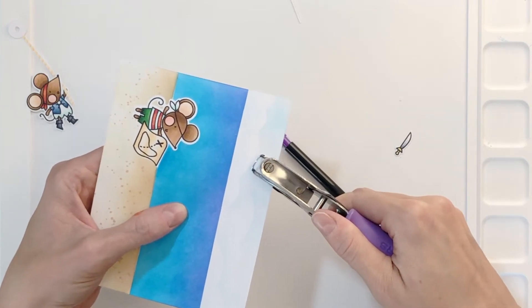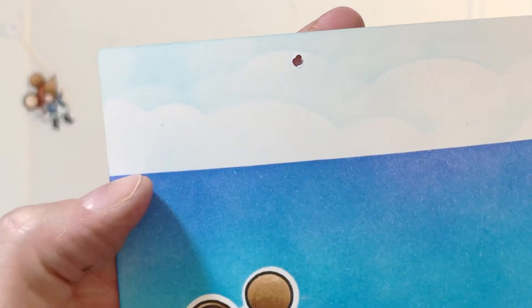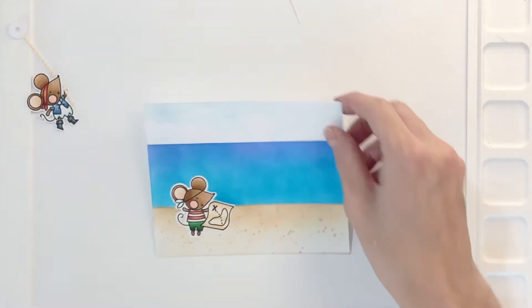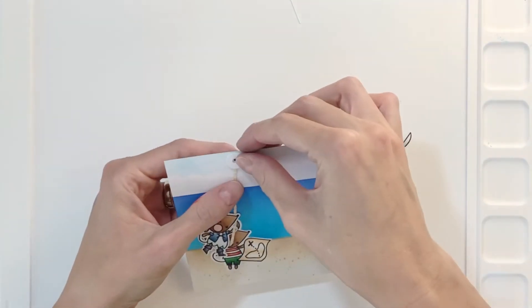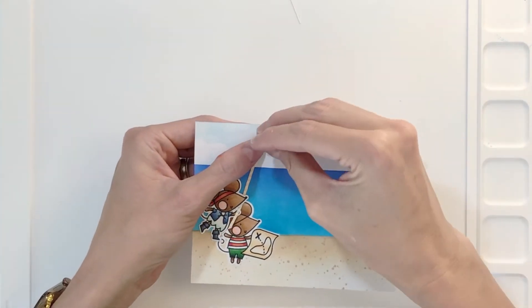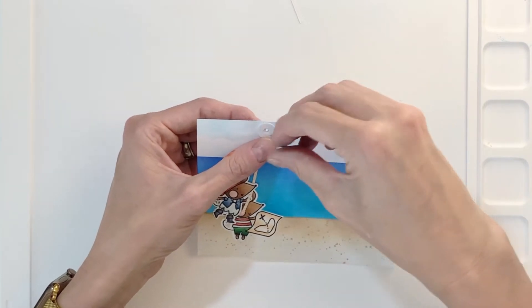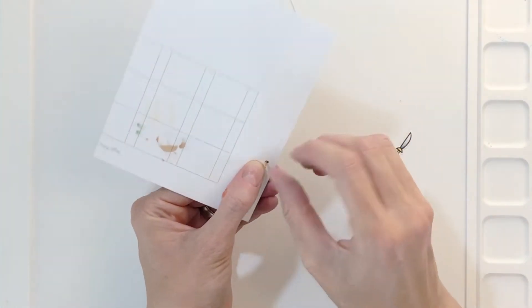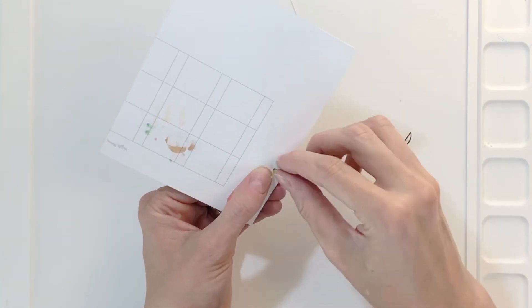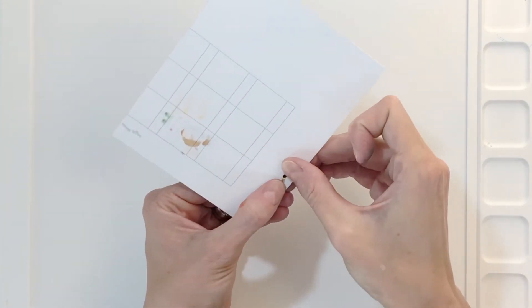My hole punch is a pretty small punch so I'm punching it several times to make that hole a little bit bigger so that the brad can fit through. Once I've punched that I then can grab my swinging pirate and then feed the brad through the donut pieces and the background panel. And then once I fed them through I'll just fan those out and that is almost complete, my swinging pirate.